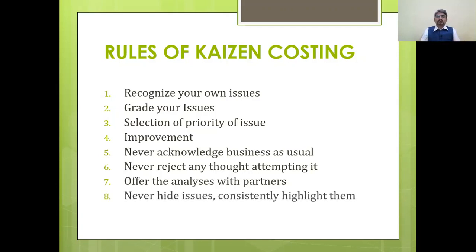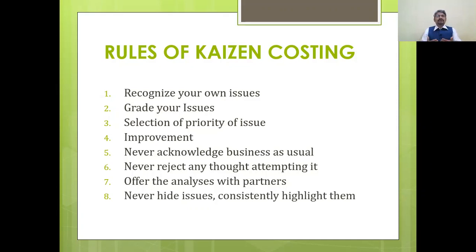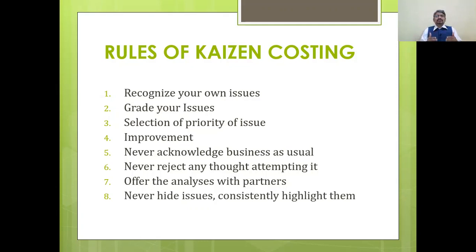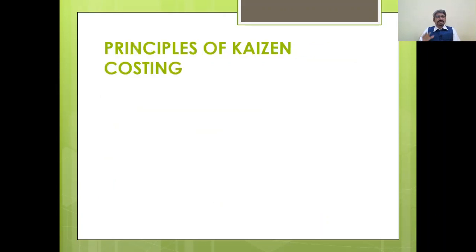Never hide issues — consistently highlight them. This is a main and important rule of Kaizen costing. Always show and highlight issues so they can be resolved according to their priority. The main issues exist in organizations, but we address them one by one according to grading and priority. Don't hide issues; consistently highlight them so they can be resolved in time.